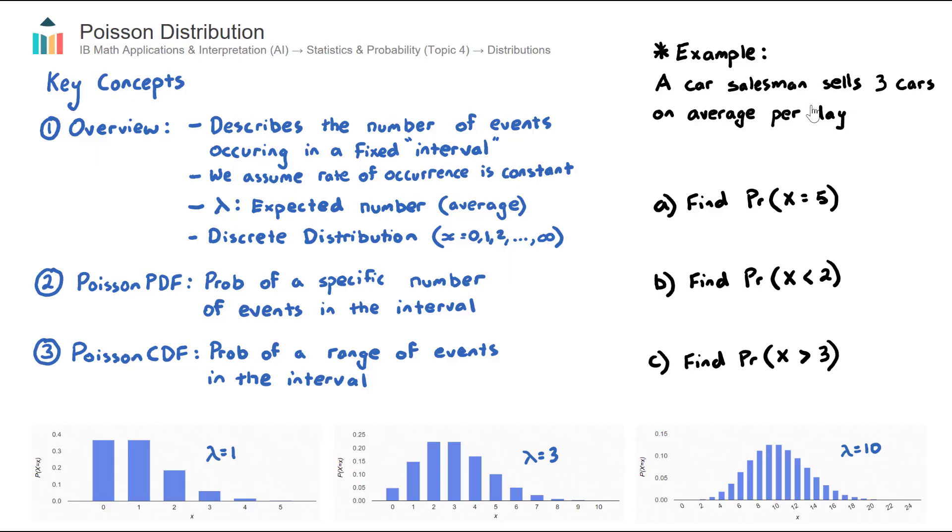So throughout the time interval, the rate of occurrence is constant. That's a very important assumption for the Poisson Distribution.